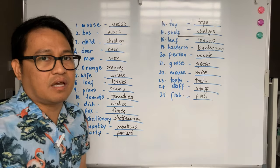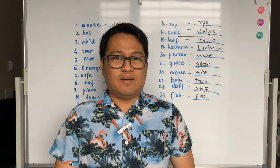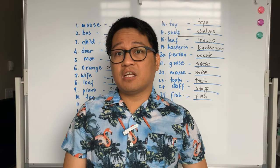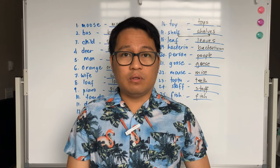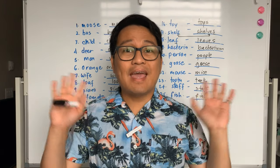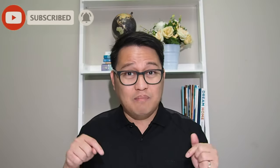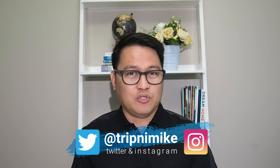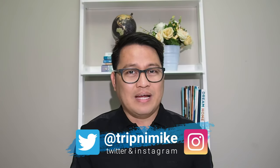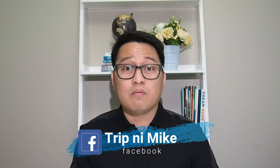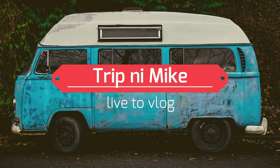There you have it, 25 items. I hope you got them correctly. That's it for today and our next topic is countable and uncountable nouns. See you again. Please don't forget to subscribe on my YouTube channel, like this video by clicking the thumbs up down below and hit the notification bell for more updates. Follow me on social media accounts like Twitter and Instagram at Tripp ni Mike. Like my Facebook page Tripp ni Mike. Thank you for watching, see you again.